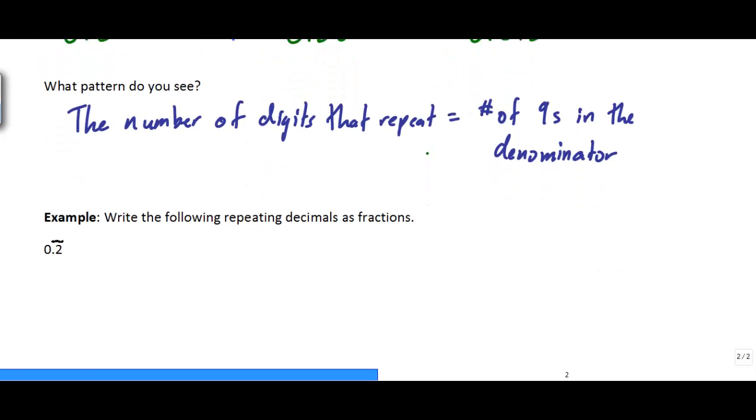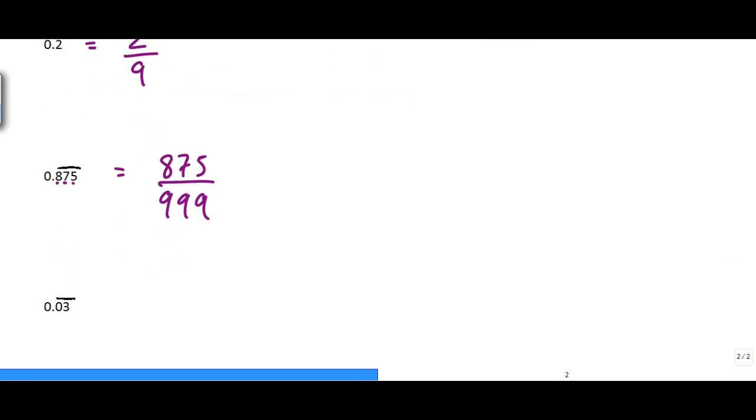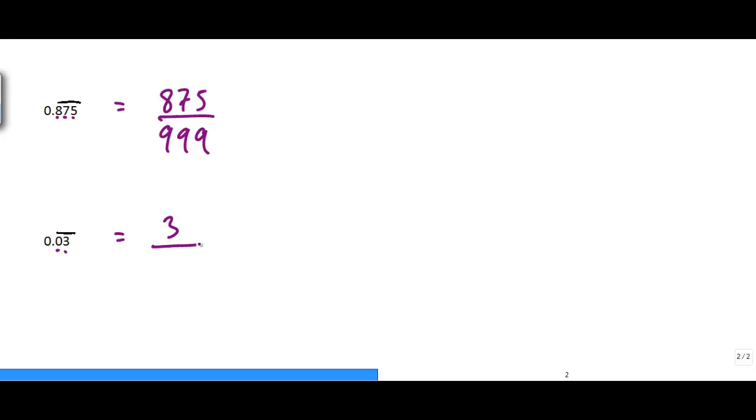So for example, if we wanted to write the following repeating decimals as fractions, 0.2 repeater would be the same as 2 over 9. And 0.875, I've got 1, 2, 3 repeating decimals, so that would be 875 divided by 999. And 0.03 repeater, I've got two repeating decimals, so that would be 3 over 99. You notice I don't need to put the 0 here because we know this is 0 in front of that 3.